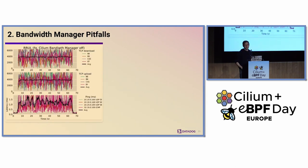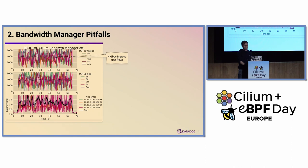Now, the lessons we learned while trying to put this in place. We did some benchmarks. This graph shows three things: download, upload, and latency. As a baseline benchmark without the bandwidth manager, we have basically 4 gigabit per second on average per flow on ingress, 4 gigabit per second on average per flow on egress as well, and average one millisecond latency.